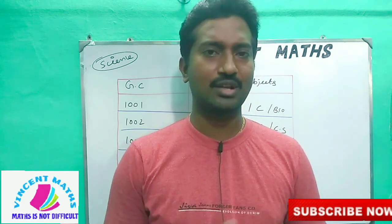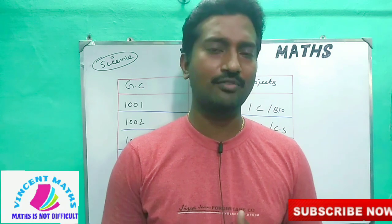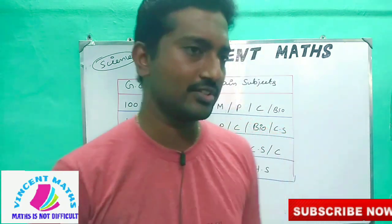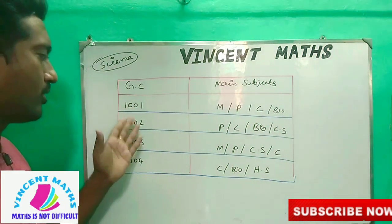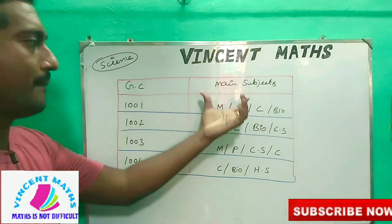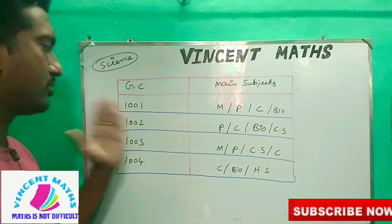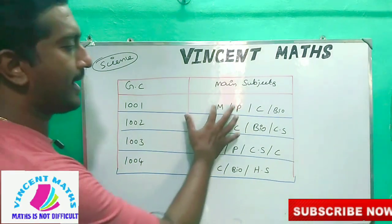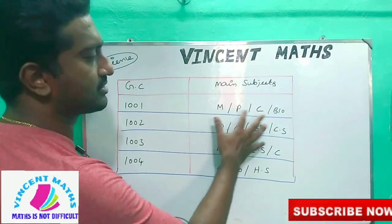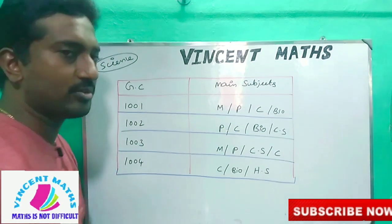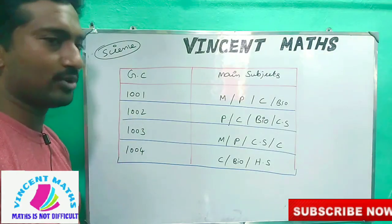You can get a playlist in the description box and you can use it. Now let's see a science group first. If you have a group, you have a main subject. Let's say a grade — the first group, that's 1001 group. Let's say bio-max; there's one group.